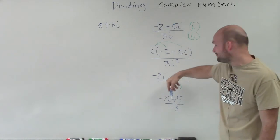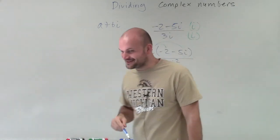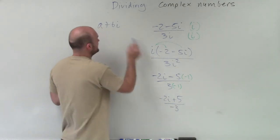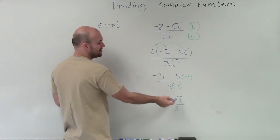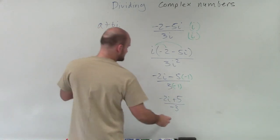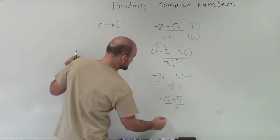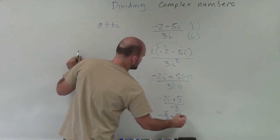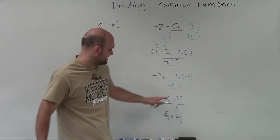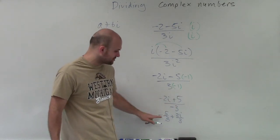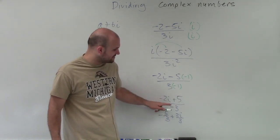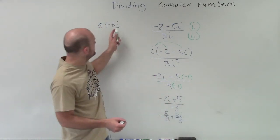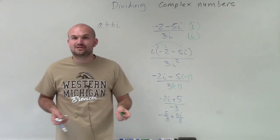This is close to a plus bi format, but not exactly there. We need to make sure we have our real number first and our imaginary number last, then divide the 3 into each of those. So my final answer is going to be negative 5 thirds plus 2i over 3. That's positive 5 divided by negative 3, which is negative 5 thirds, and negative 2i divided by negative 3 becomes positive. That is your final solution in simplified a plus bi format.